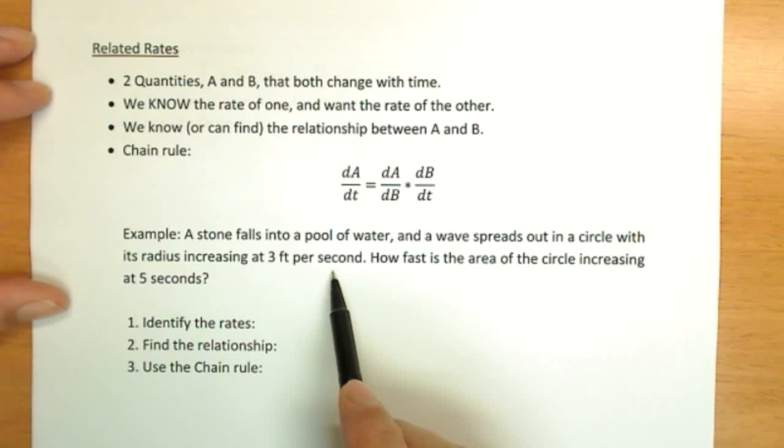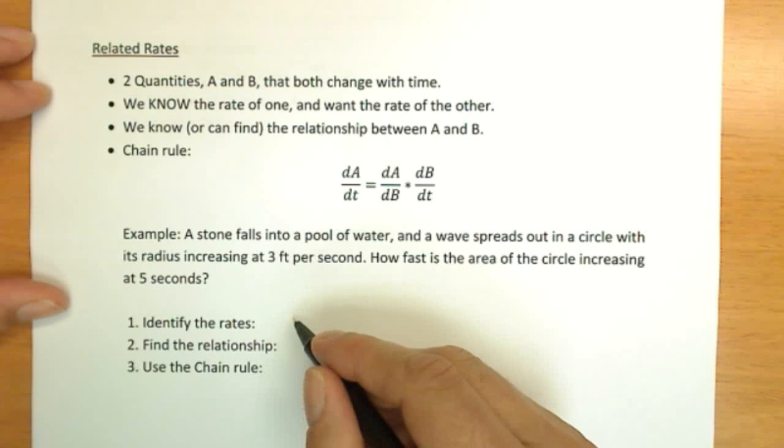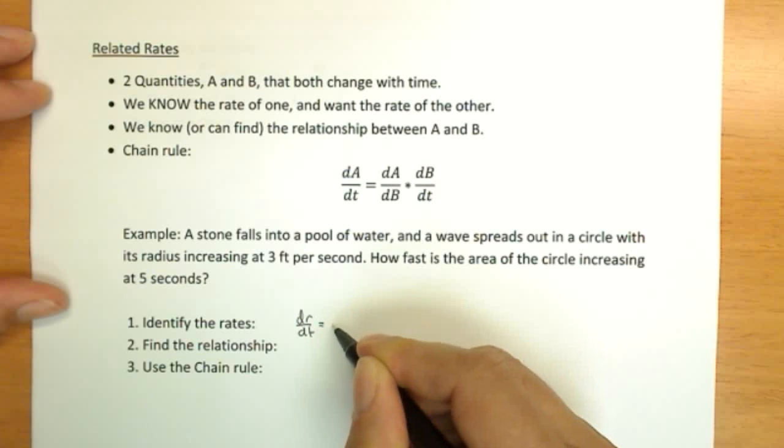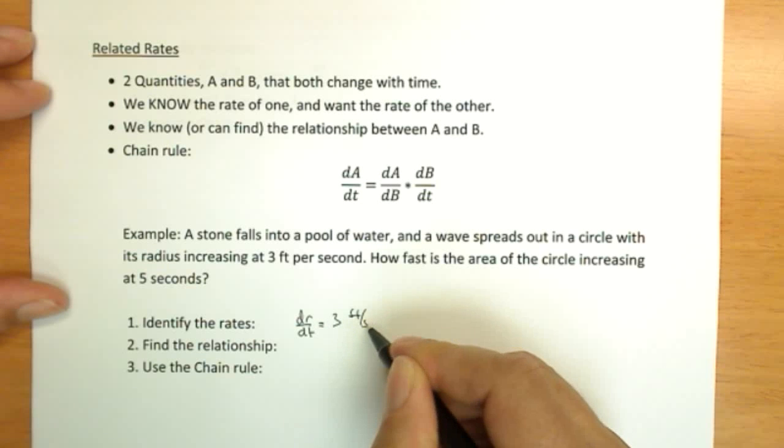So reading the problem again, we see that waves are spreading on a circle. The radius is increasing at 3 feet per second. Radius is changing, it's increasing, and we have an amount. So that is a rate,